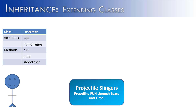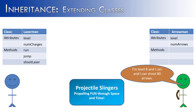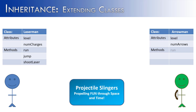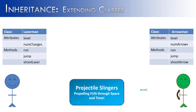Now let's say we want to create a second character called Arrow Man. Arrow Man has a level and a number of arrows he can shoot. He can run, he can jump, and he can shoot arrows.